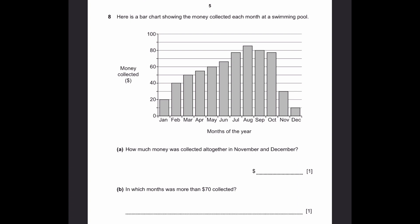Here's a bar chart showing the money collected each month at the swimming pool. How much money was collected altogether in November and December? Each two divisions is 20, so each division is 10. December will be 10, November is 30. So 30 plus 10, which is $40.